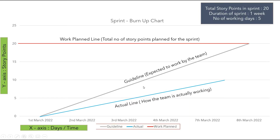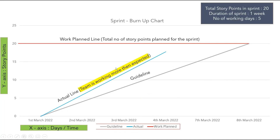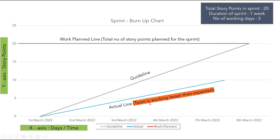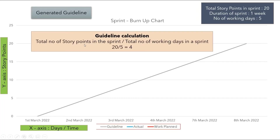In this video, the guideline will be gray in color, the actual line will be blue in color, and the work planned line will be red in color. If the actual line is above the guideline, that means the team is working more than expected. If the actual line is below the guideline, that means the team is working lesser than expected. The formula for the guideline is: total number of story points in the sprint divided by total number of working days in the sprint. In our case, it is 20 divided by 5, which equals 4. That means the guideline suggests that every day the team has to complete or burn up 4 story points to successfully complete all the user stories in the sprint.